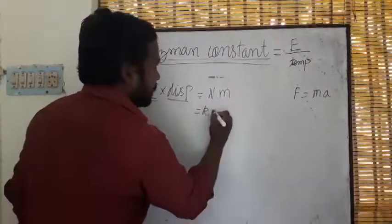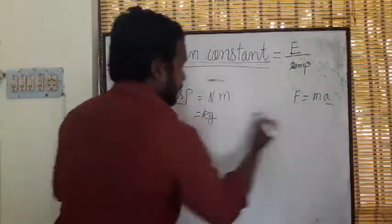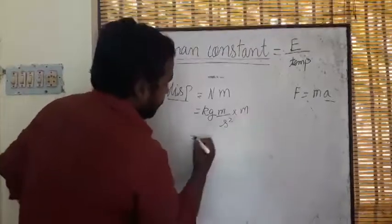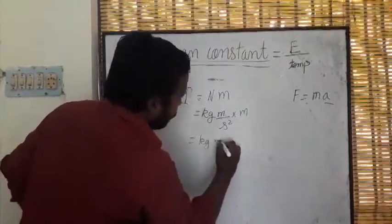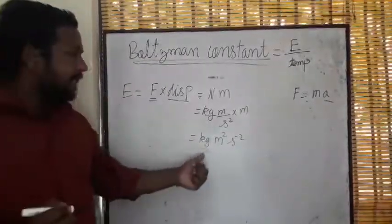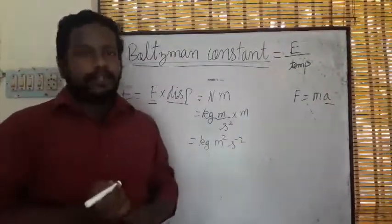So Newton is mass (kg) times acceleration (meter per second squared) into meter. That means energy is kg meter squared second minus 2. The energy we get is kg m² s⁻² and temperature.